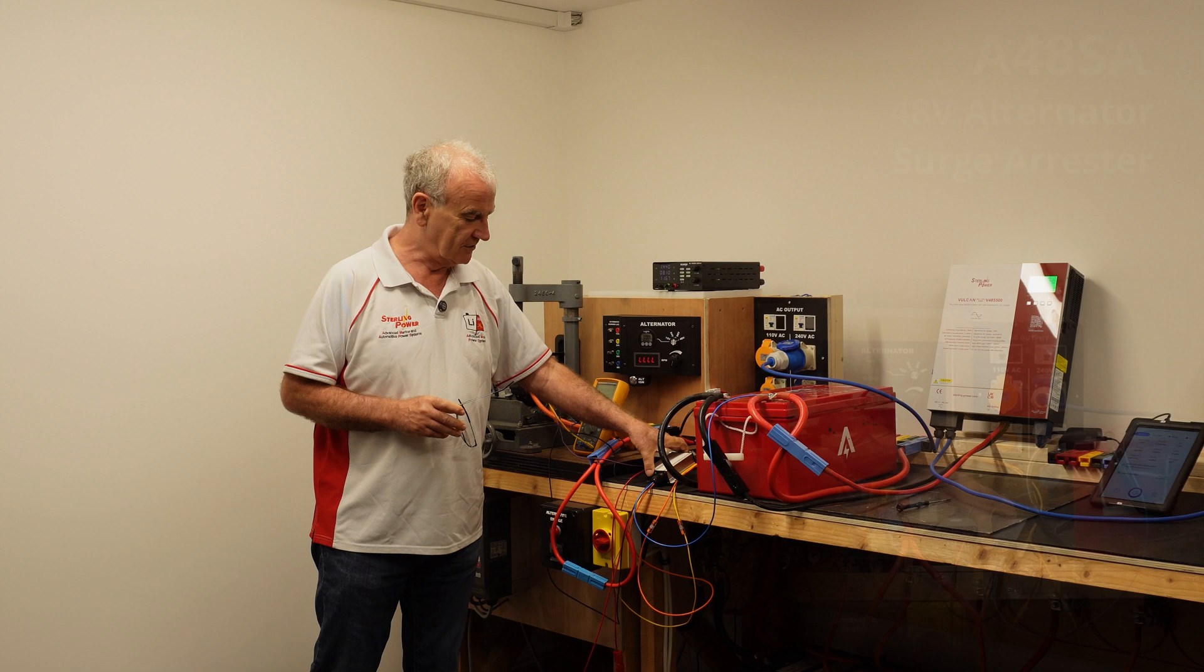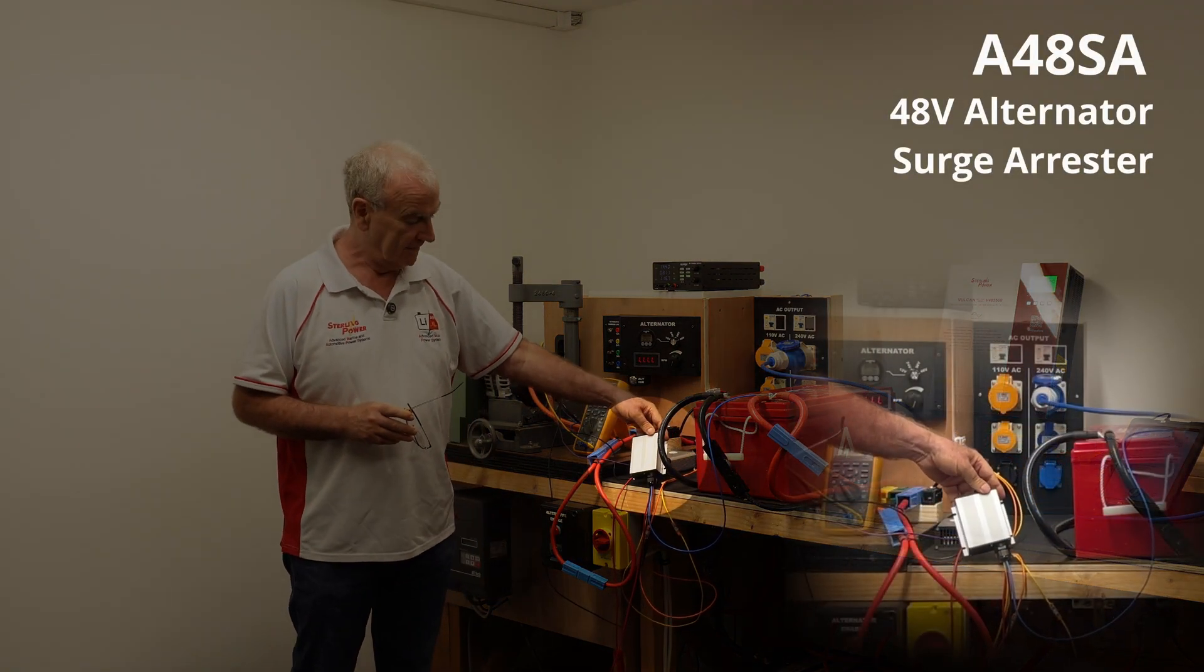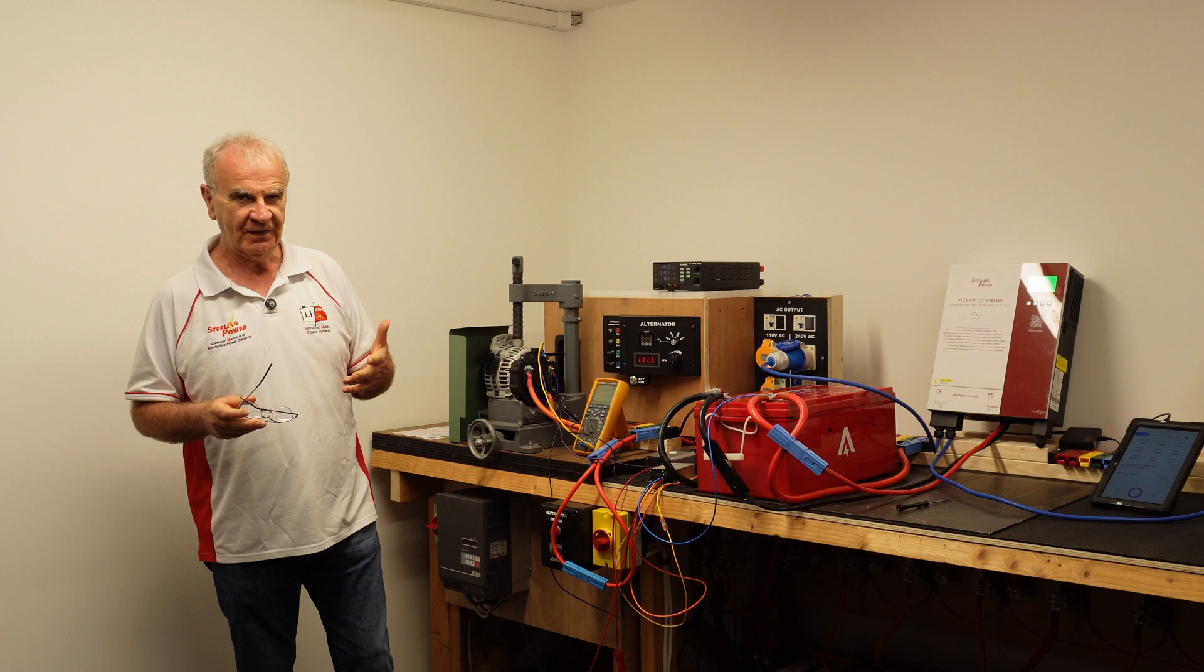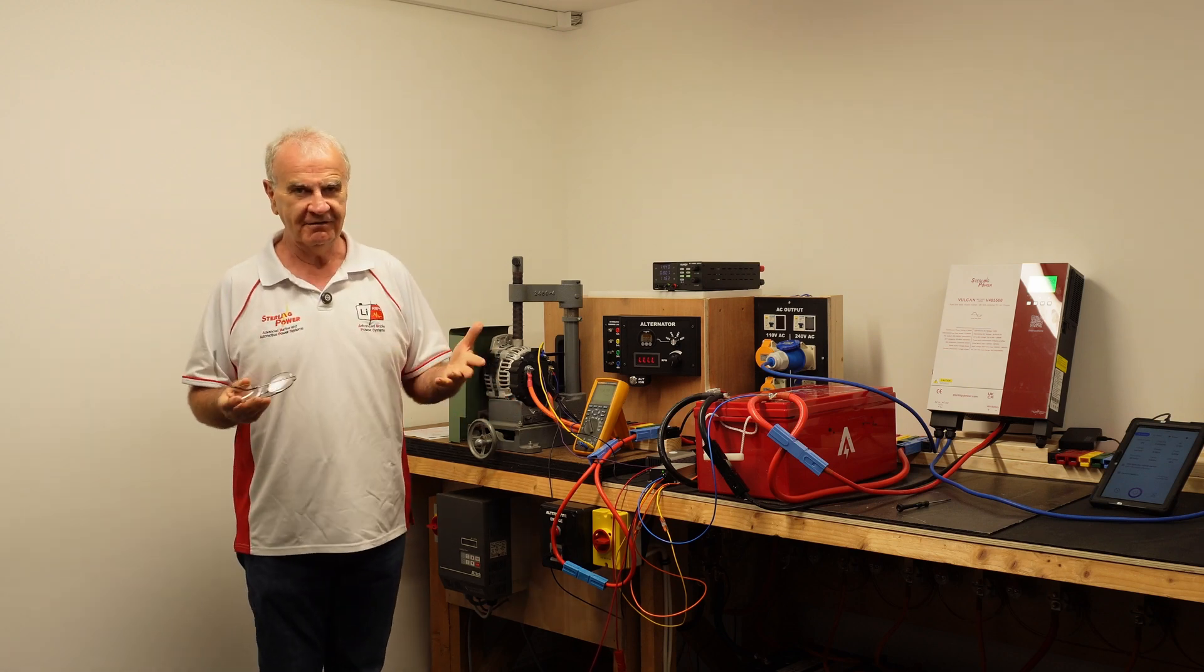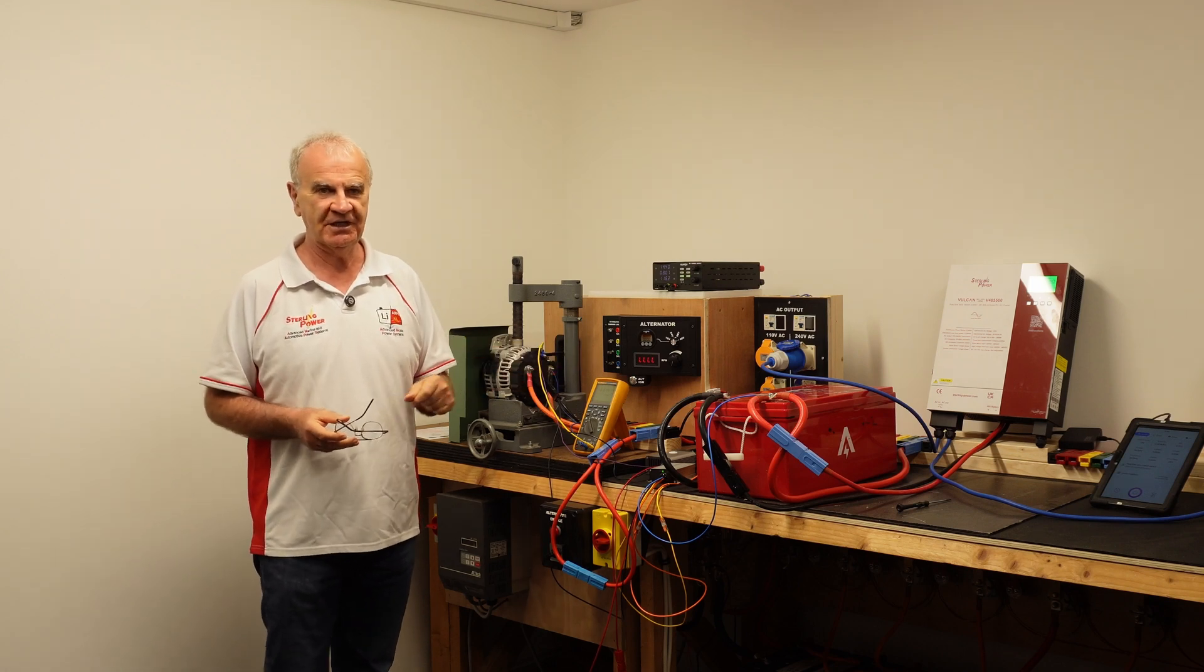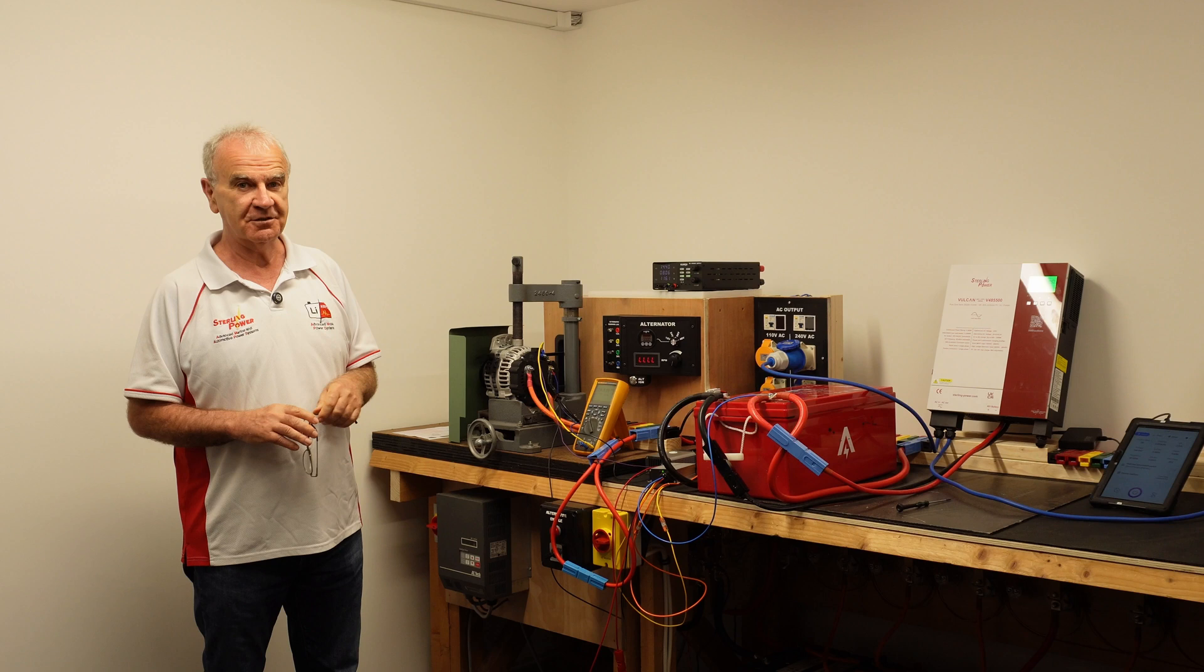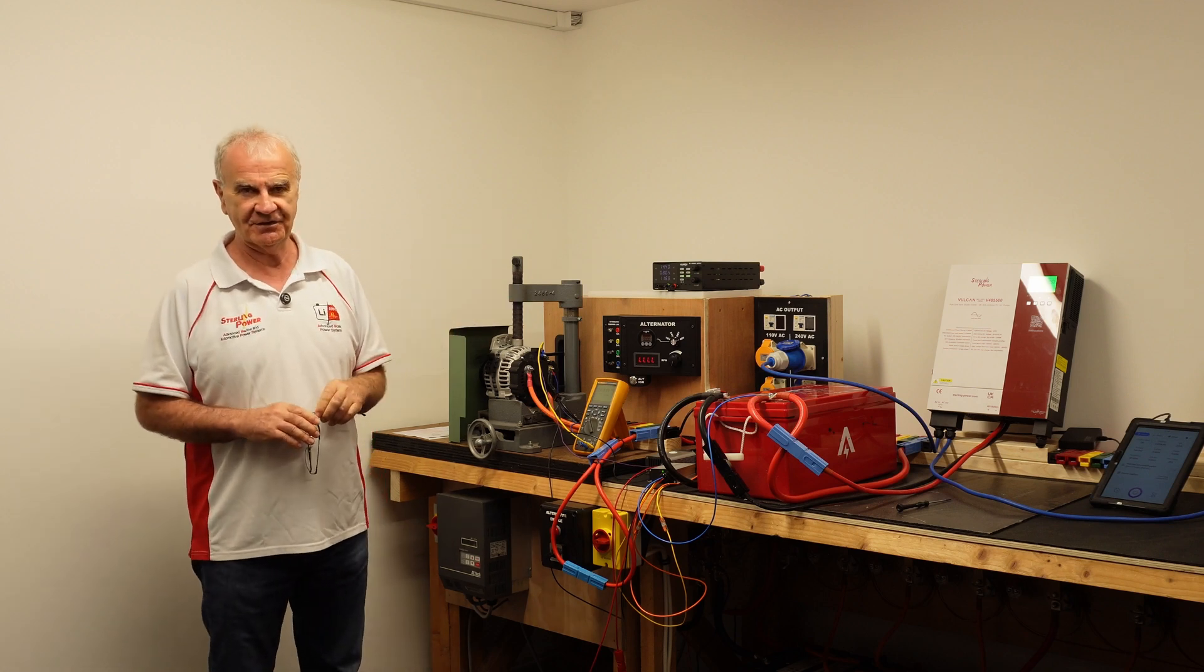This is the surge arrestor box which is used for lithium batteries. The problem with lithium batteries is sometimes when they're full they just open circuit, so you can have the alternator running flat out at 100 amps and then the battery just goes we're finished, and due to the inertial magnetism inside the alternator you get a large spike which can wreck everything in your system including the alternator.